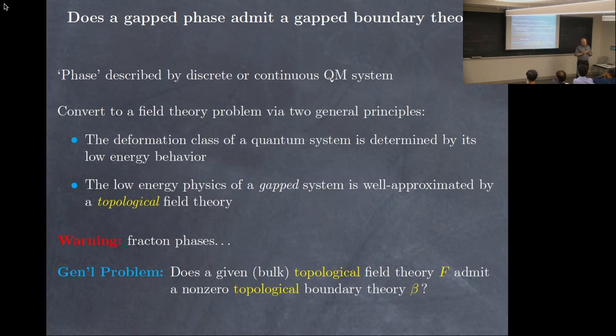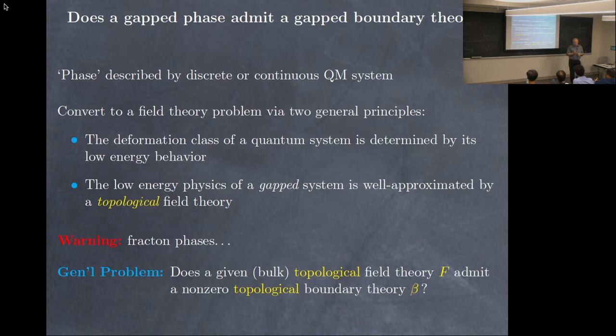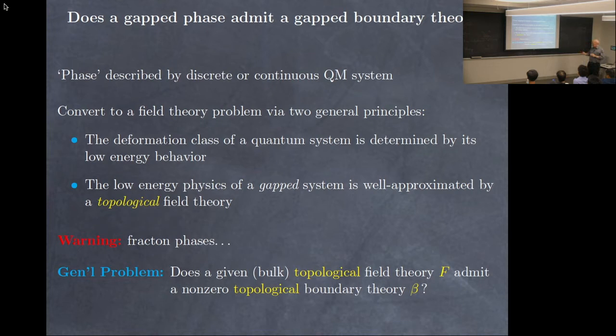If we think that principle is true, we can apply it both to the bulk theory and to the boundary theory. So if we have a gapped bulk theory and a gapped boundary theory, then at low energy this should be well approximated by a topological field theory in the bulk, and a boundary theory for that topological field theory, which is also topological. So then the problem becomes one in topology. Furthermore, if we think this approximation has relativistic invariance, that will tell us something about this topological field theory.